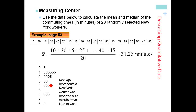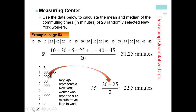When you want the median, first you have to put the data in order. Our data did not come in numerical order, so we'll put it in a stem plot or order it some other way. Since we have 20 pieces of data — an even number — we need to find the median between the 10th and 11th pieces. Counting from the bottom: 5, 10, 15 — we can clearly see that 20 and 25 are our two middle values. Averaging those gives us a median of 22.5. Make sure you keep numbers in order as you go up your stem plot.